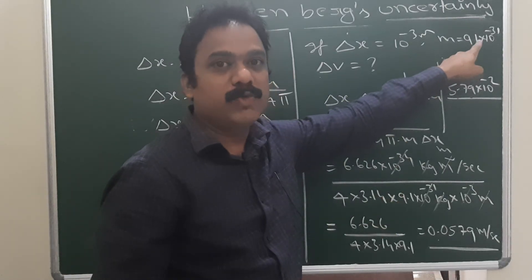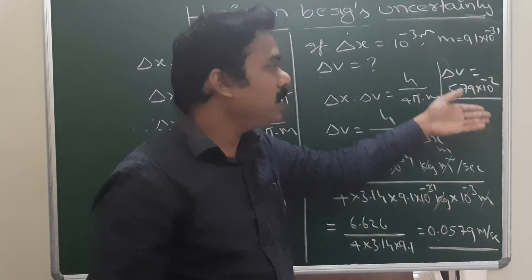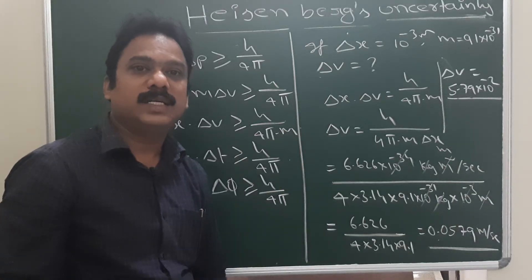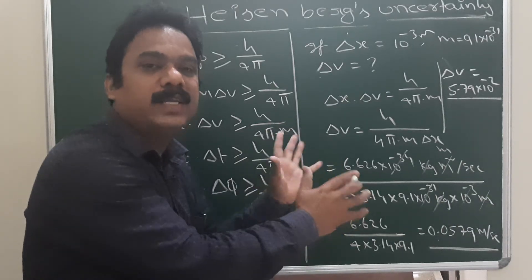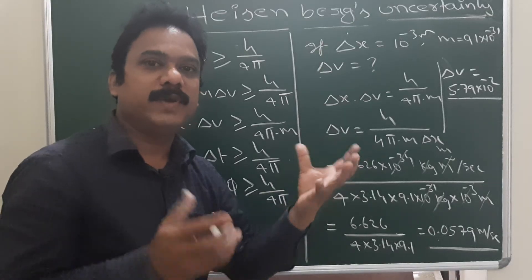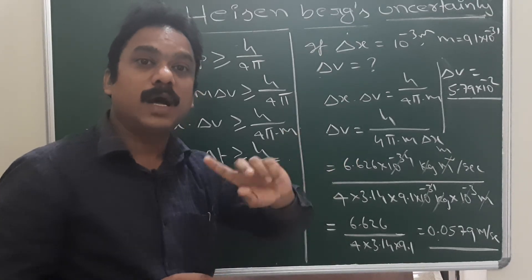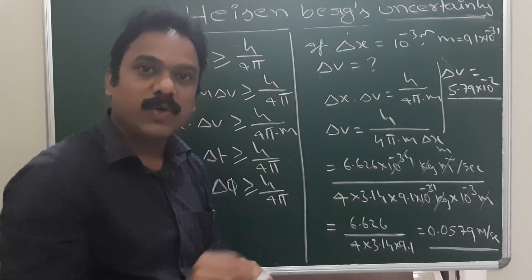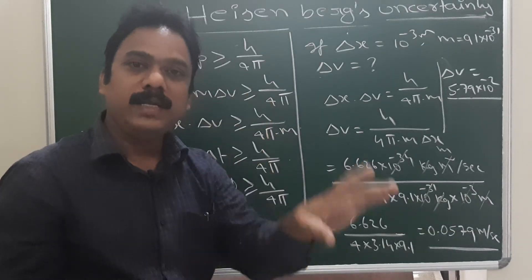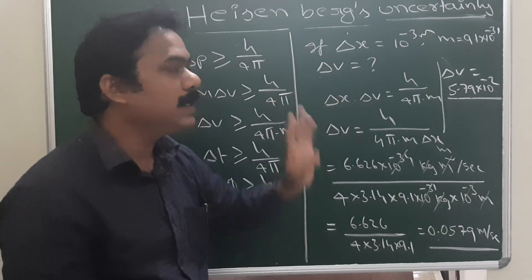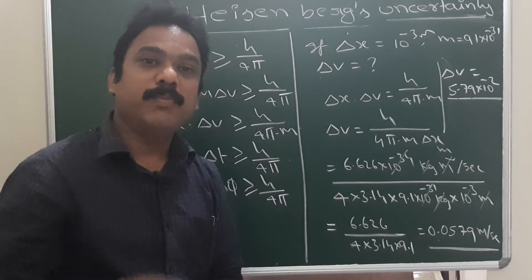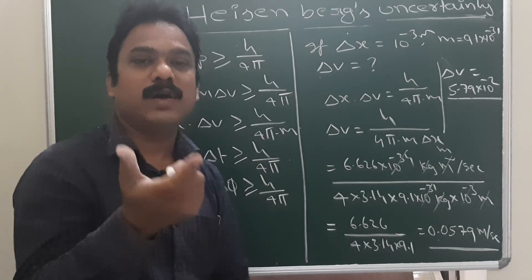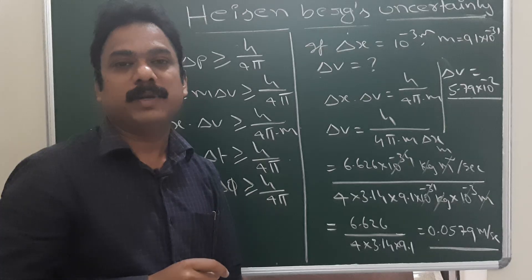Note that if a larger mass like 20 grams or 100 grams is given, the errors would be much smaller. The significance of Heisenberg's uncertainty principle is that it rules out Bohr's theory, since we cannot find the exact position of the electron. This introduces the probability concept and leads to the wave mechanical model in advanced atomic structure.